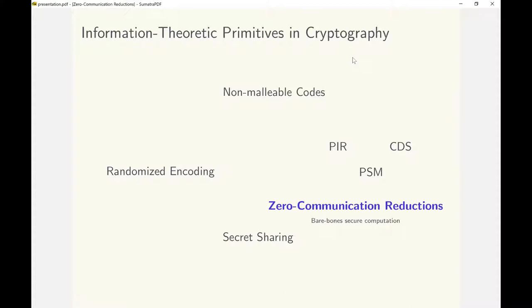In this talk we introduce a novel information theoretic primitive called zero communication reductions or ZCR for short. ZCR is a bare bones model of two-party secure computation.